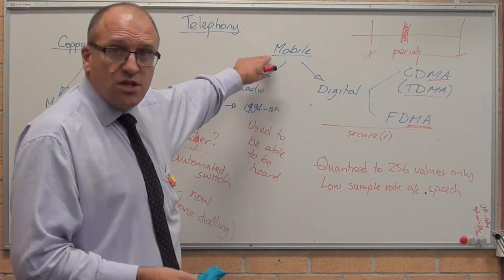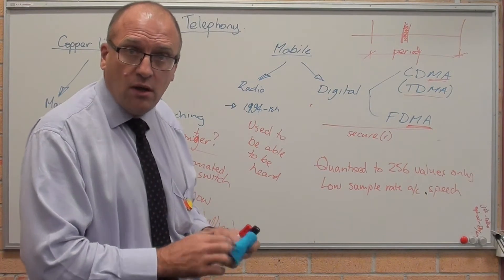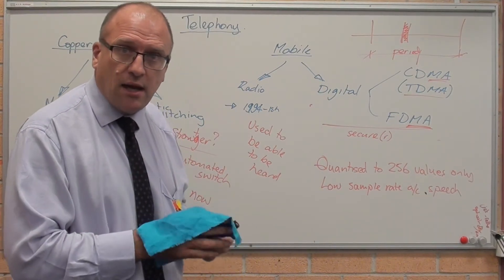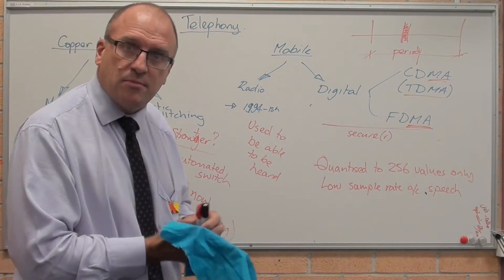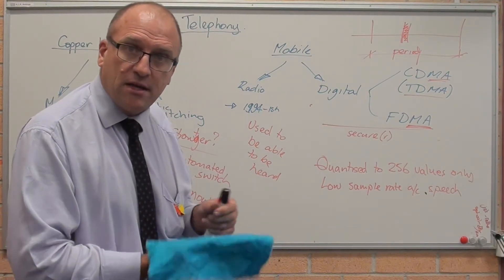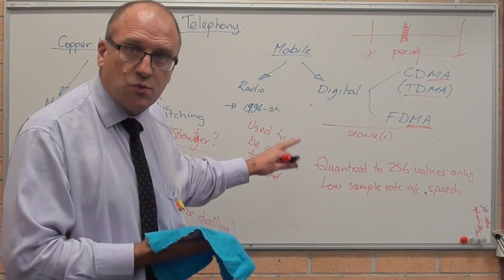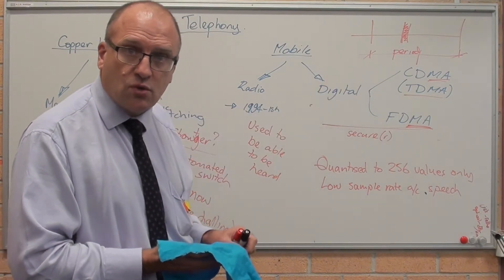Mobile phones used to be a straight radio up until about 1994. Somebody actually recorded one of our politicians not saying very nice things about his other people in his party. And about that time, the decision was made that we were going to go to digital communication.